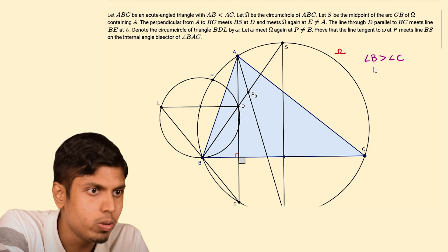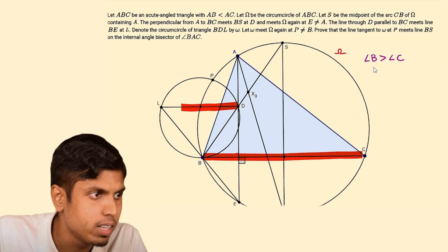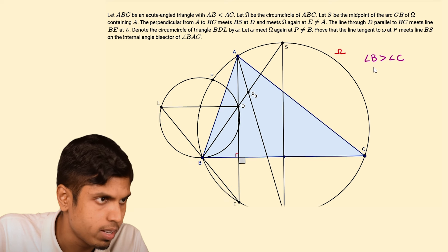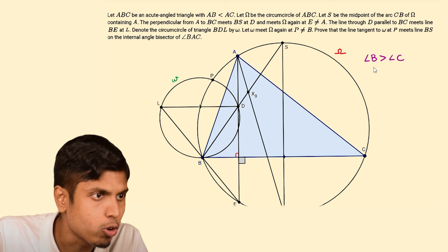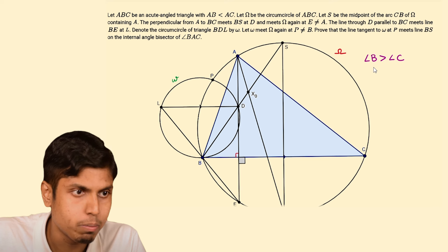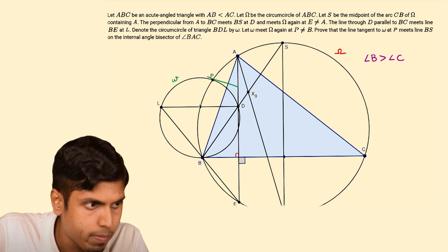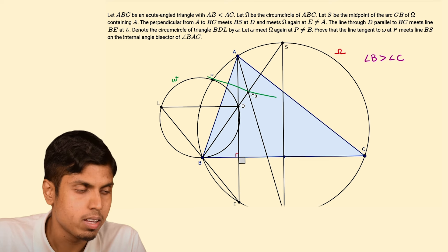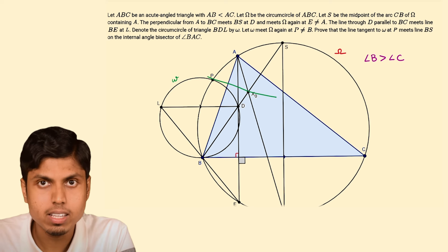The line through D parallel to BC — this line that is parallel to BC — is constructed to intersect the line BE at L, also depicted here. We denote the circumcircle of triangle BDL by omega. Let omega intersect capital omega at P, which is not equal to B. We must prove that the line tangent to omega at P meets BS at the intersection of the angle bisector of angle BAC with BS.